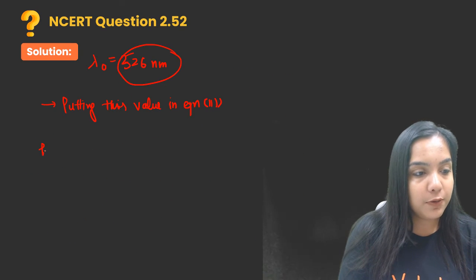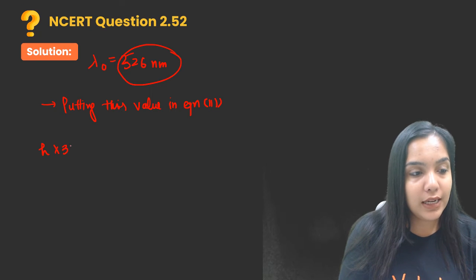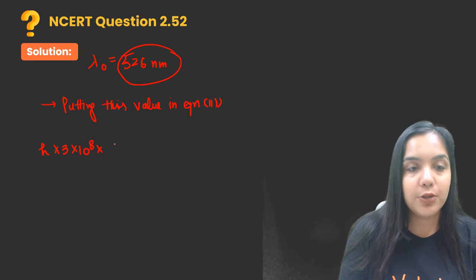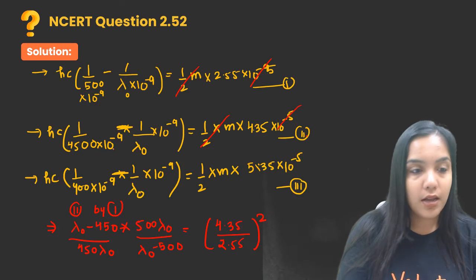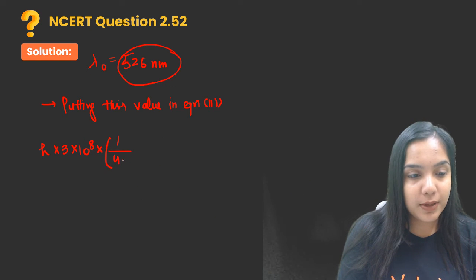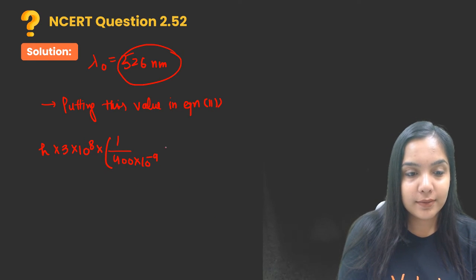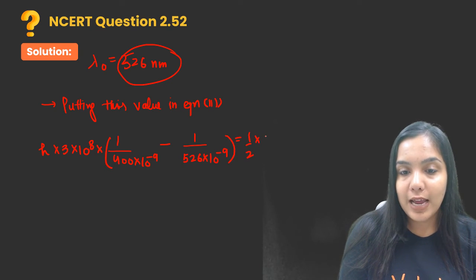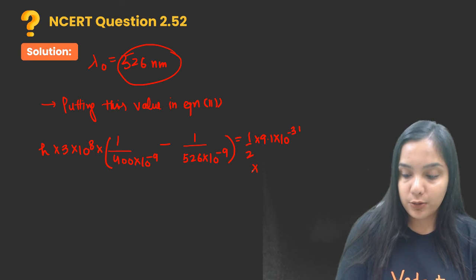Equal to half m value, that is 9.1 into 10 raised to power minus 31 into v value is 5.35 into 10 raised to power minus 5 squared, half mv square.